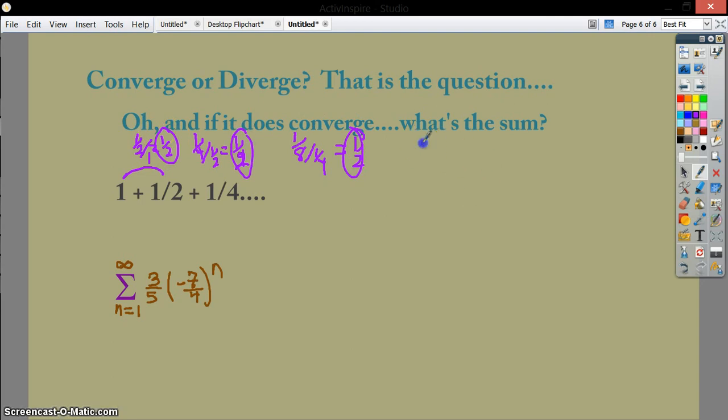And my common ratio, the absolute value of it, is less than one or not. Well, I have one-half, and it is less than one. Check. So I can say that this one converges.